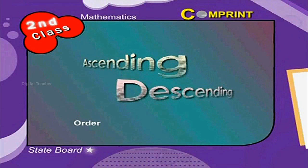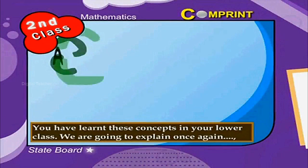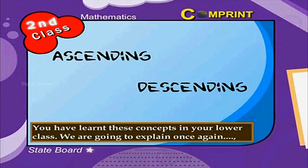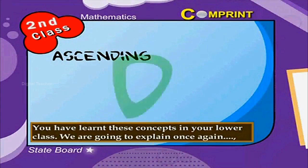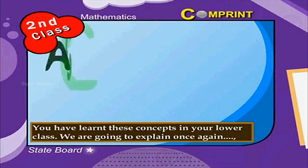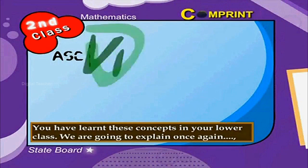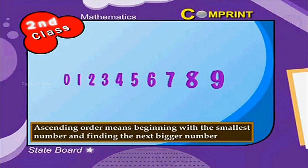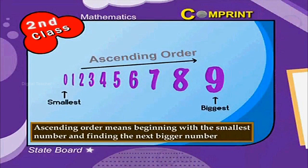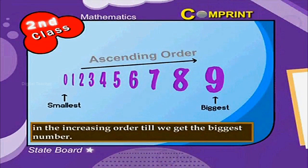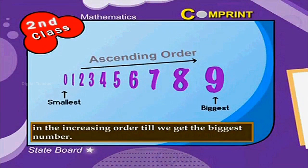Ascending Order and Descending Order. Children, you have learnt these concepts in your earlier class. We are going to explain once again in this chapter. Ascending order means beginning with the smallest number and finding the next bigger number in increasing order till we get the biggest number. For example,